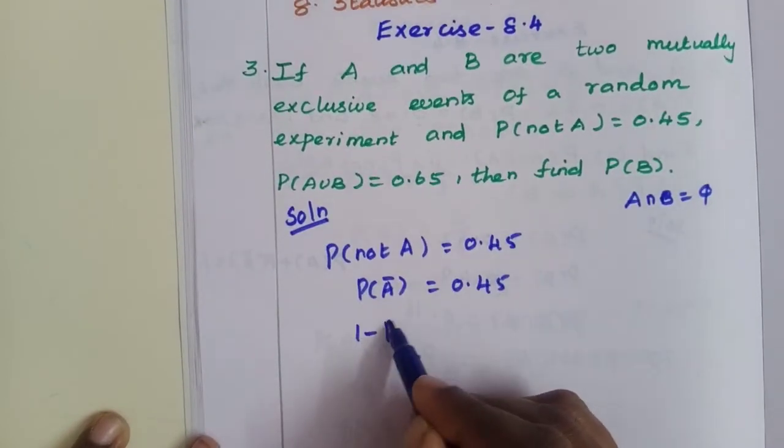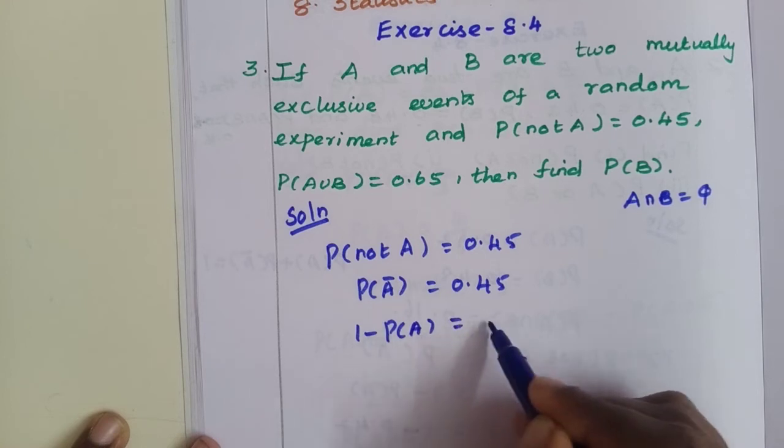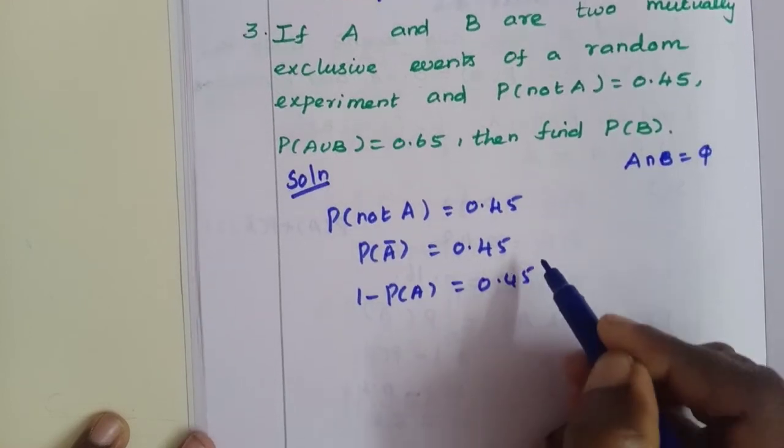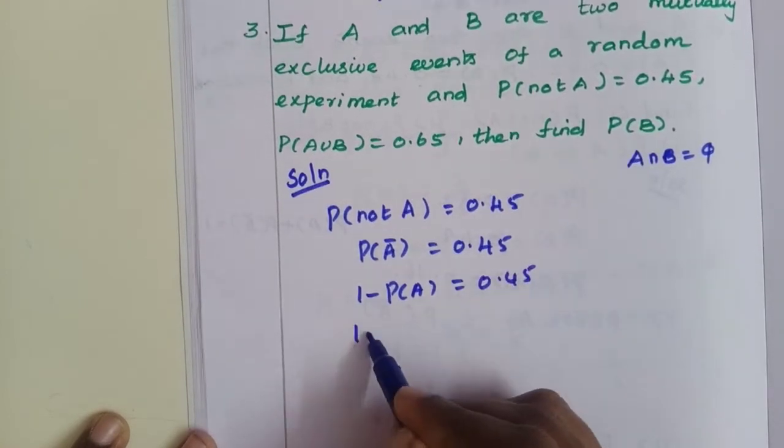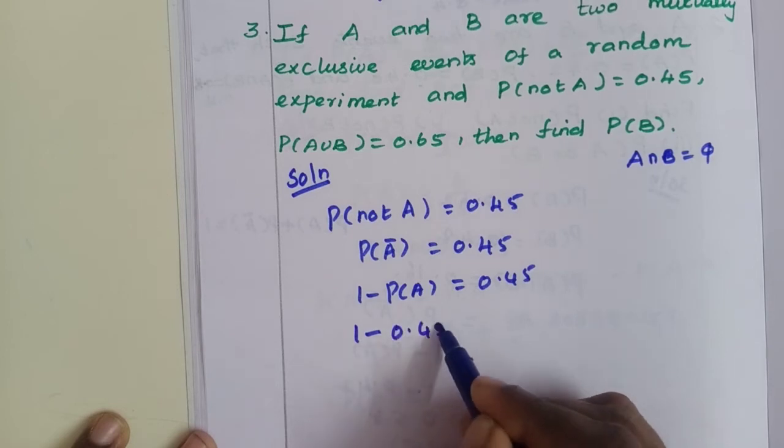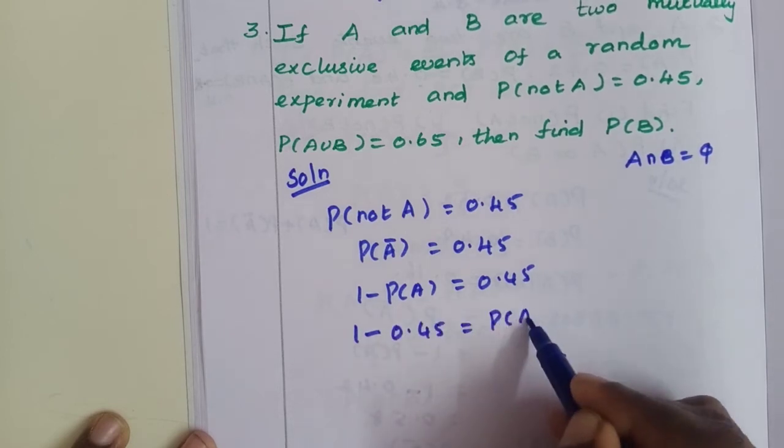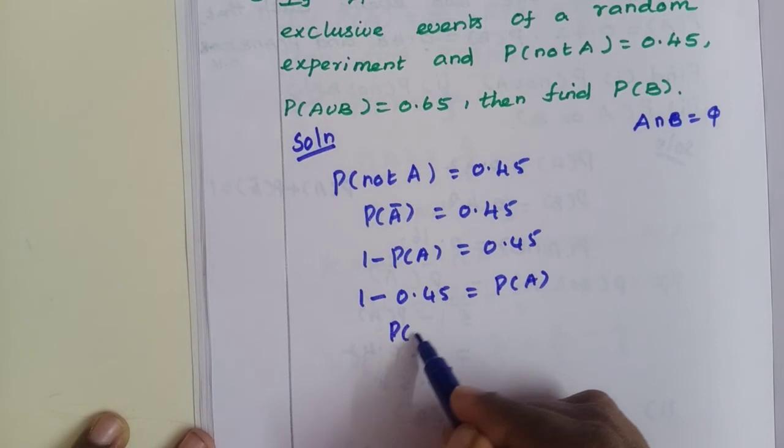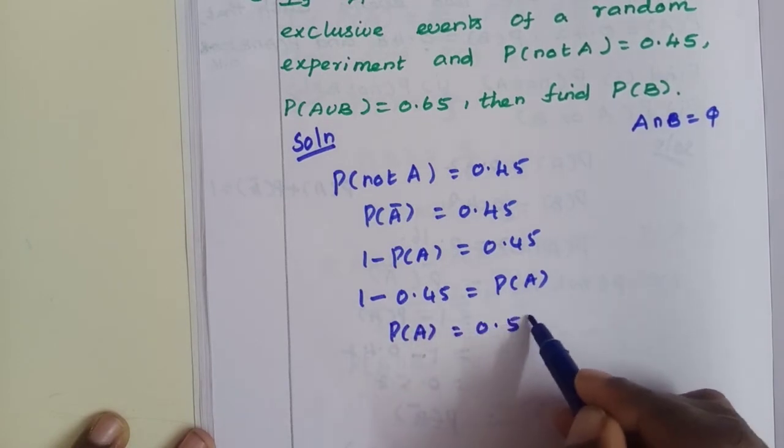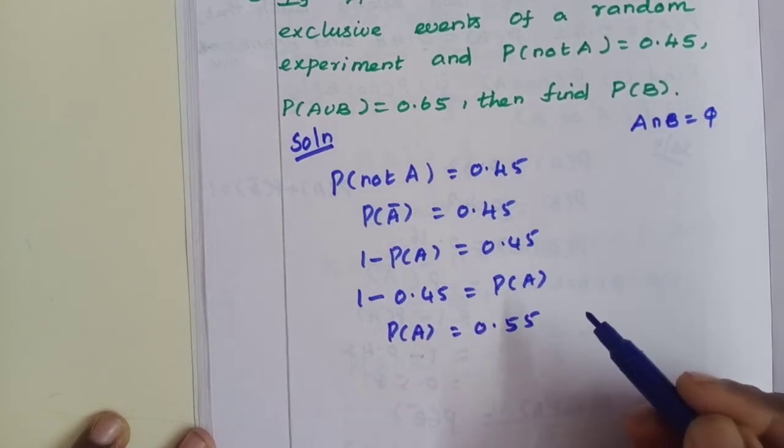One minus P(A) equals 0.45. P(A) on the right side, moving to the other side: one minus 0.45 equals P(A). Subtracting, P(A) equals 0.55. Okay.